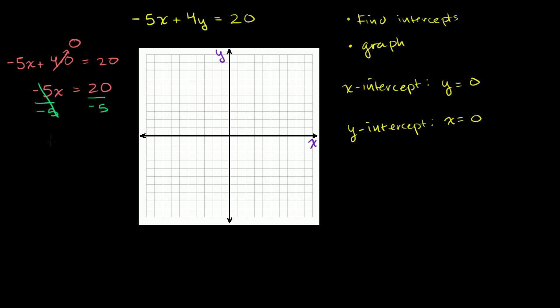And we get x is equal to 20 divided by negative 5 is negative 4. So when y is equal to 0, x is equal to negative 4. Or if we wanted to plot that point, we always put the x coordinate first. So that would be the point negative 4 comma 0. So let me graph that.